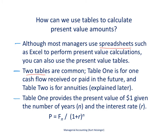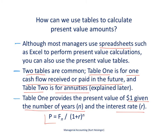There are typically two tables that are used. Table 1 is for one cash flow received or paid in the future, and Table 2 is used for annuities. I am going to focus on Table 1 for the rest of this lecture; Table 2 will be discussed in a separate lecture. Table 1 provides the present value of $1 given a certain number of years and an interest rate, using the present value formula. The table shows us what that present value is for $1.